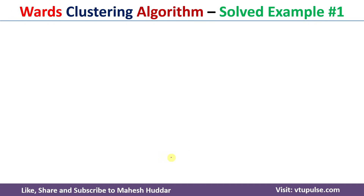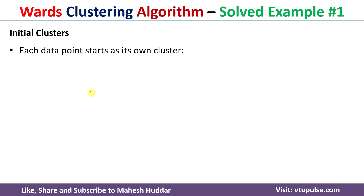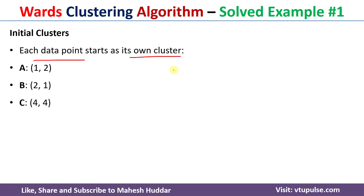In the WOTS clustering algorithm, we need to initialize the clusters. Here, each data point will be considered as its own cluster. We have five data points A, B, C, D and E, and these data points will each be considered as their own clusters.